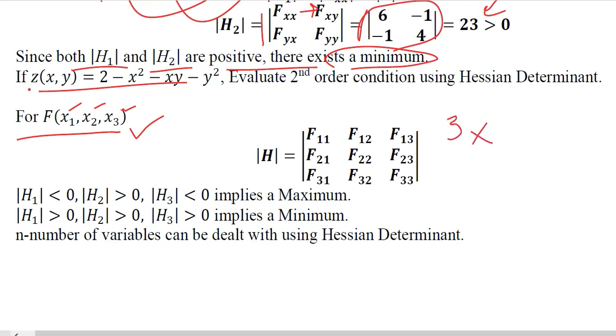In that case there will be a determinant of three into three order. You can see F_11, F_12, F_13, then F_21, F_22, F_23, then F_31, F_32, F_33. We know how to construct the determinant with three independent variables.